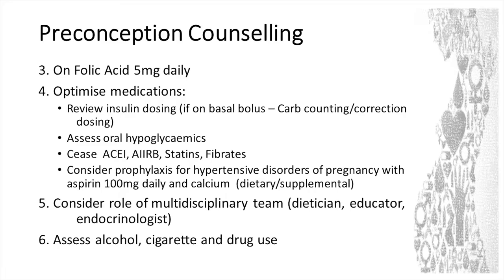It depends why they're on an ACE or A2 receptor blocker — it might be for proteinuria, it might be for blood pressure — but it's nice to address that. I always consider whether my type 1s should be on prophylaxis: there's lovely data to suggest that aspirin 100mg daily and calcium — preferably about four serves of dietary calcium, but failing that supplementary calcium — will reduce the risk of preeclampsia. We'd love to be involved. If you see these ladies, particularly with type 1 or type 2, they do tend to be high risk, so we'd love to see them earlier rather than later.